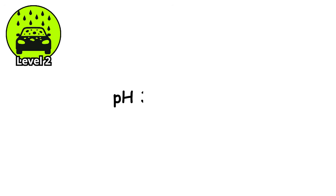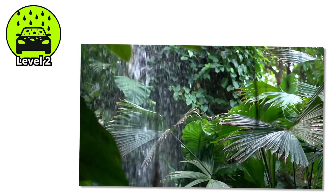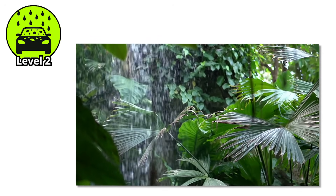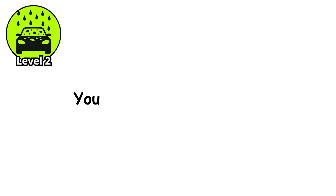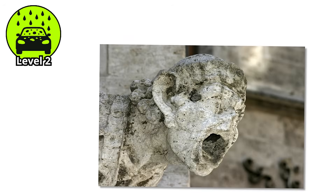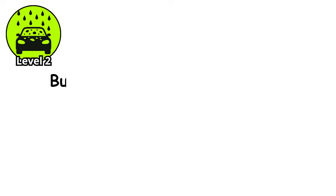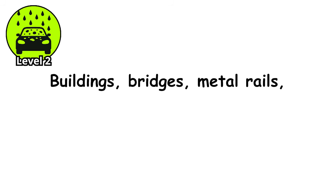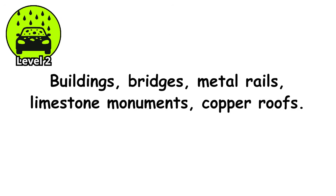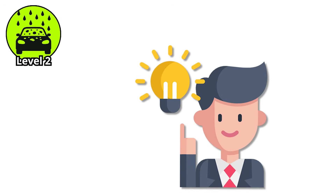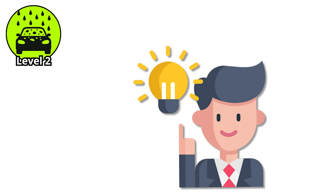Level 2. pH 3.5 to 4.0. At this level, acid rain moves from forest floors to concrete jungles. The damage is no longer silent — you can see it, smell it, scrape it off the surface of a statue with your fingernail. Rain this acidic begins to corrode infrastructure: buildings, bridges, metal rails, limestone monuments, copper roofs. Everything humans thought would outlast them begins to dissolve in slow motion.